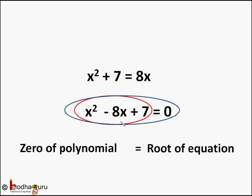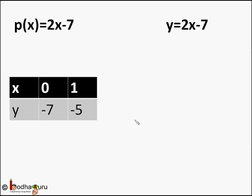But finding zero of x² - 8x + 7 looks a little tough for a polynomial of degree 2, right? So graph can help us in this. Let's see how.